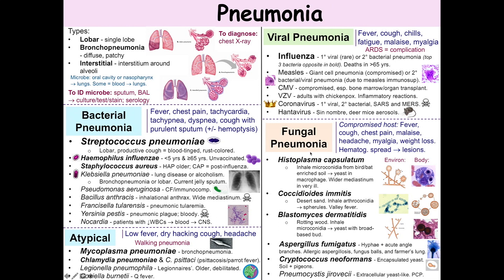Starting with Histoplasma capsulatum: in the environment you see hyphae with microconidia and large tuberculate macroconidia. You inhale these microconidia from bird- or bat-enriched soils. Birds do not carry Histoplasma, but bats can. In both cases, the guano provides nitrogen to the soil, which Histoplasma needs to grow. The microconidia are inhaled into the lungs and ingested by alveolar macrophages, but convert into a yeast form inside the macrophage. In very ill patients, you may have a widened mediastinum. Systemic infection from hematogenous dissemination can result in skin lesions or lesions in the gastrointestinal, oral, or genital tracts.